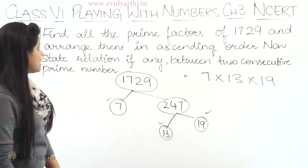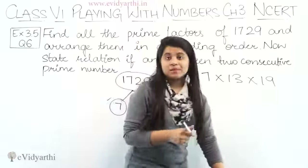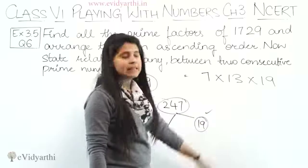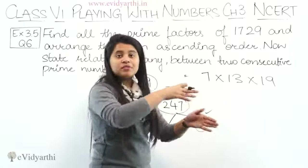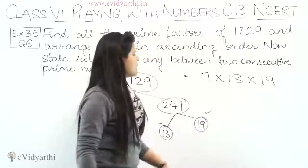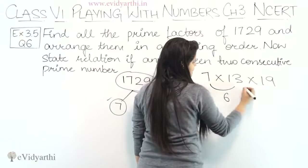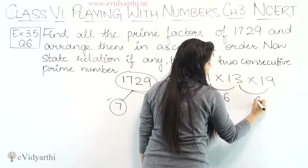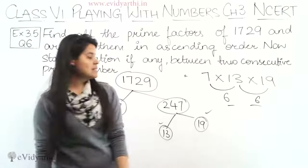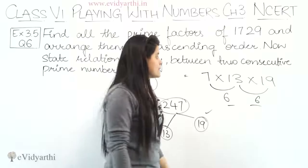Now we state the relation between two consecutive prime numbers. 7 and 13: 13 − 7 = 6. Then 13 and 19: 19 − 13 = 6. Both differences are 6, meaning the consecutive prime factors each differ by 6. That is the relation between these numbers.